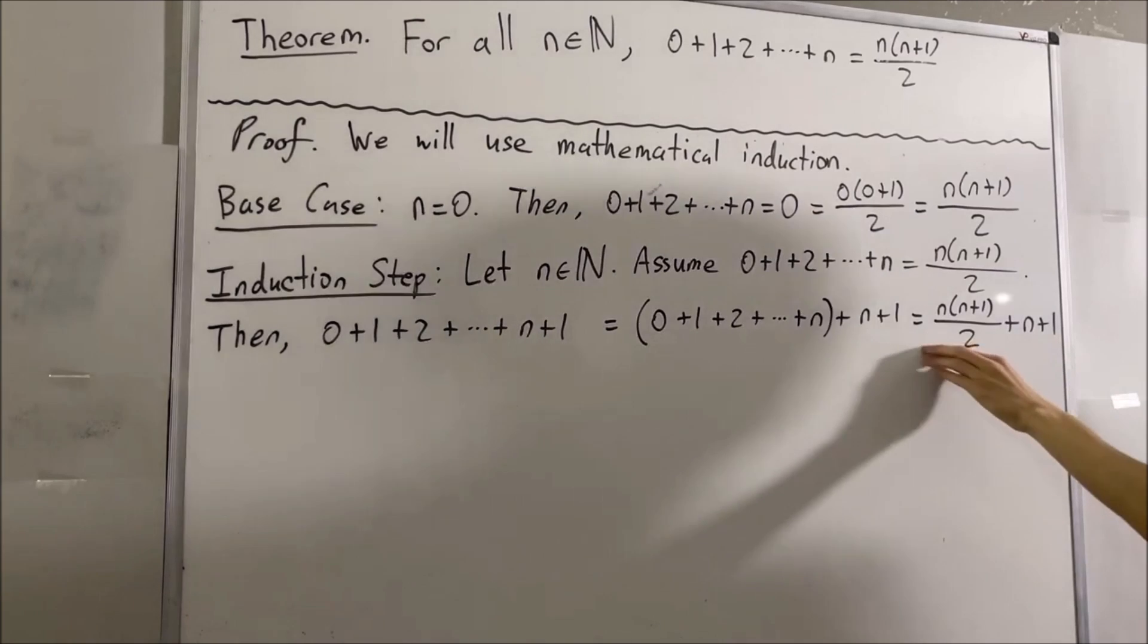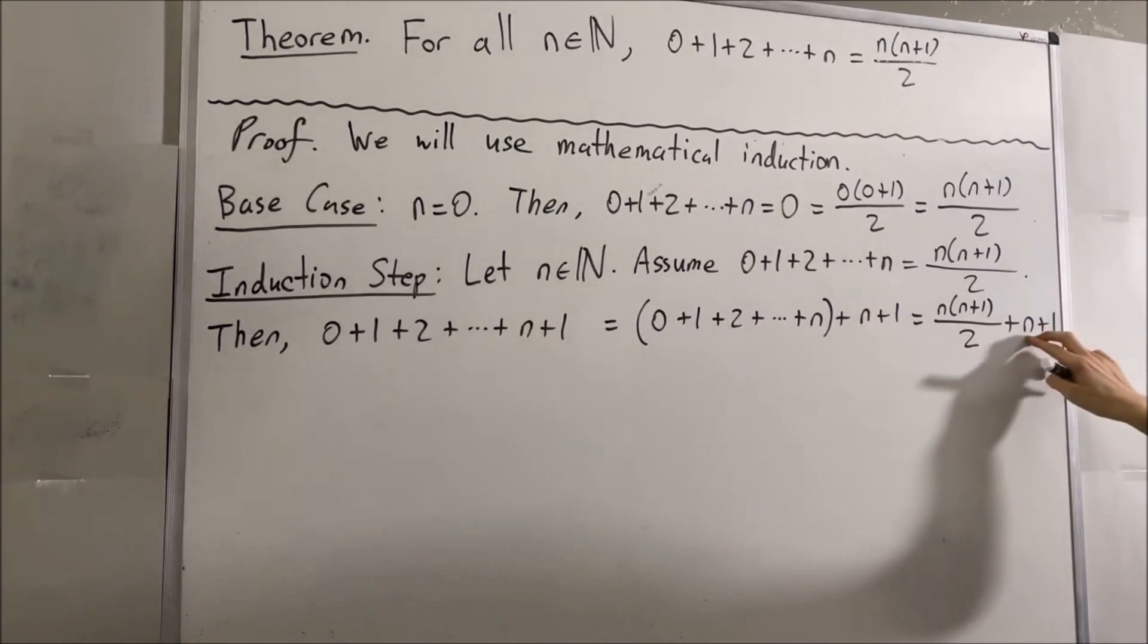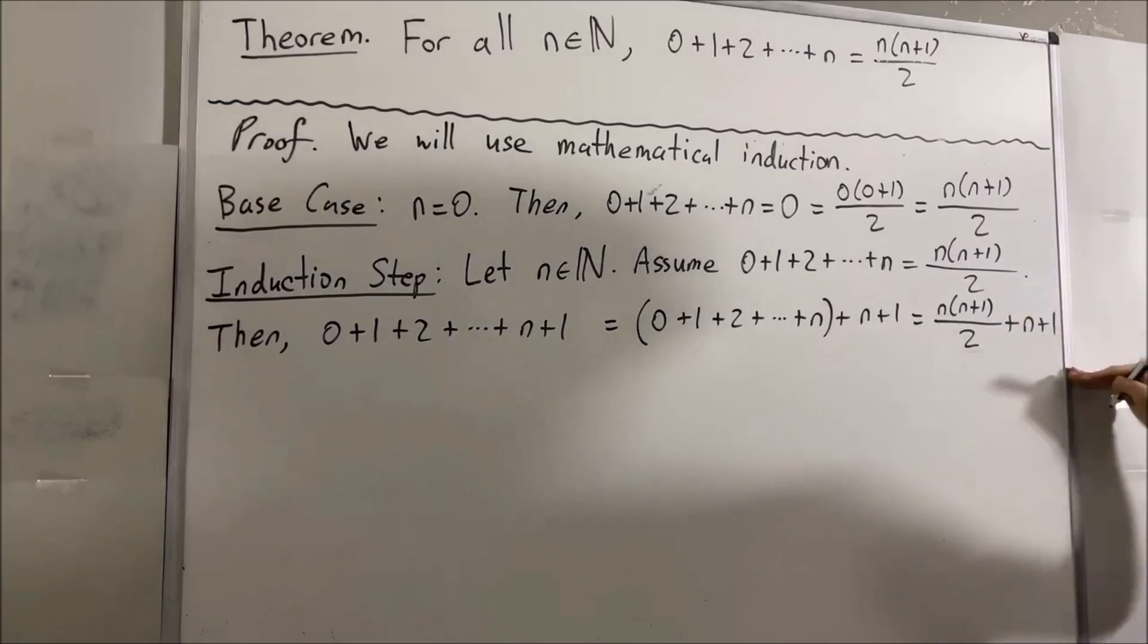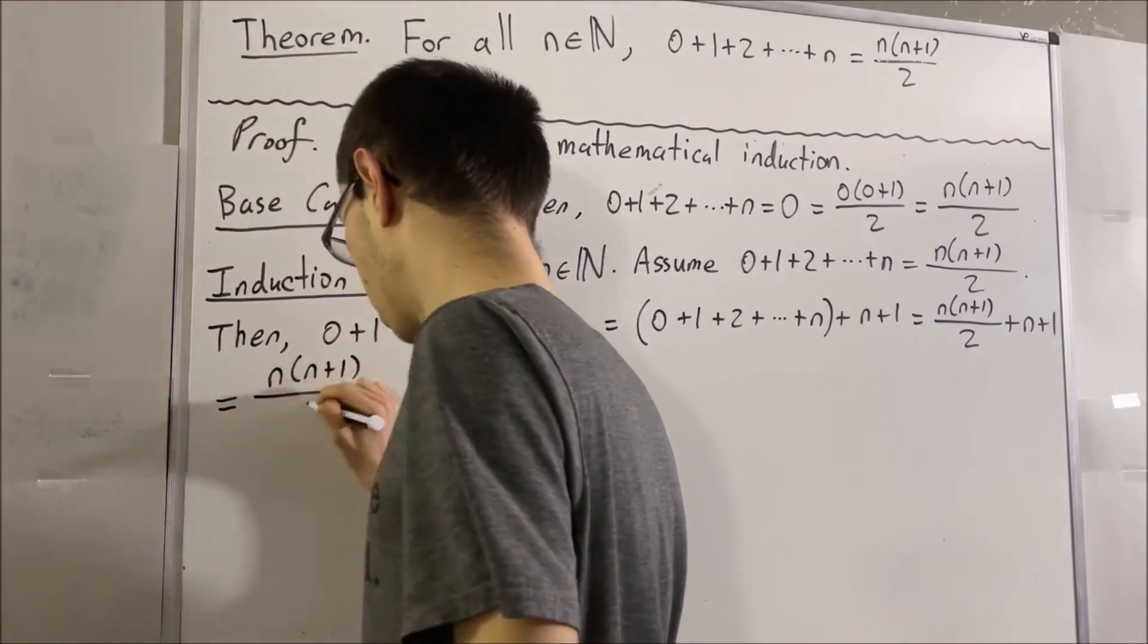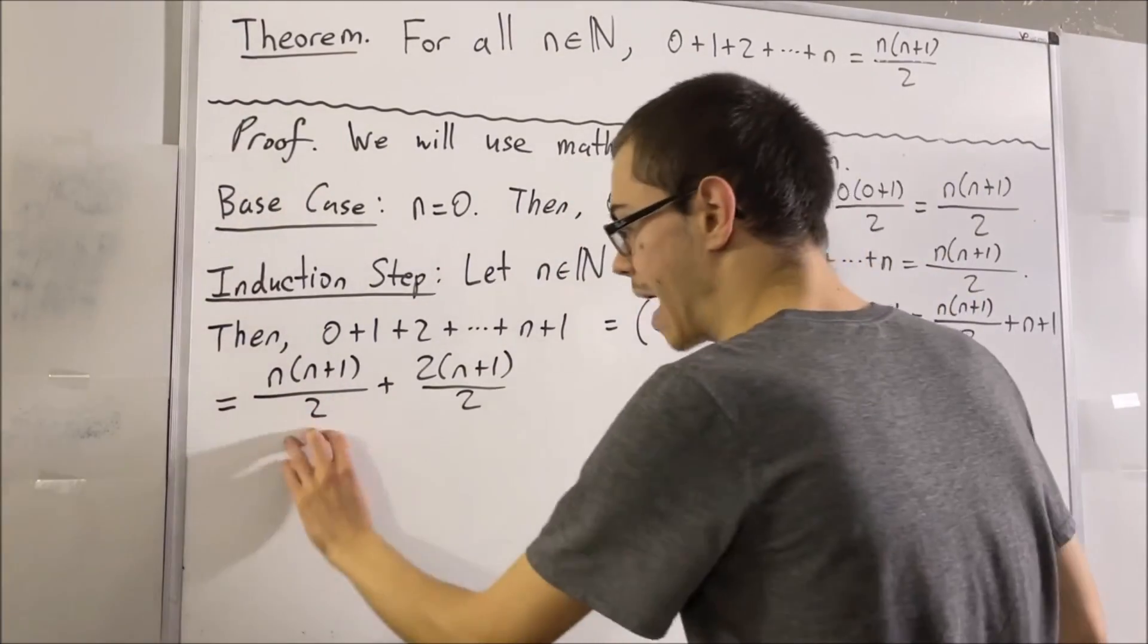Now, what I'm going to do is combine this into a single fraction. And so, to do that, we're going to get a common denominator of 2. So I'm going to take n plus 1 and multiply it by 2 over 2. And then we can add these two fractions together.